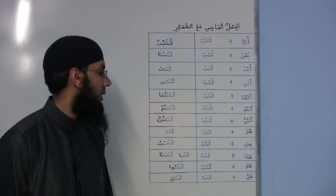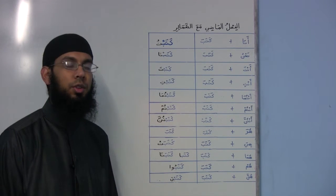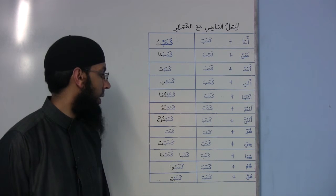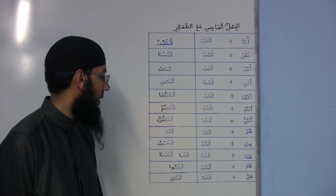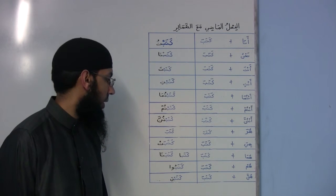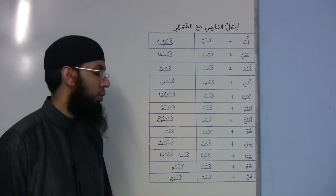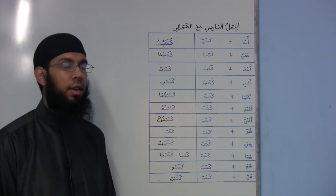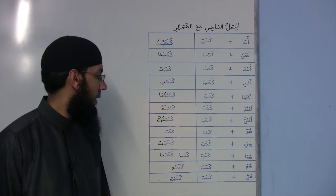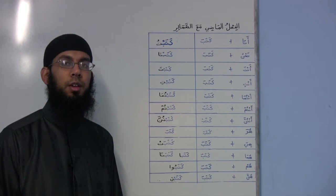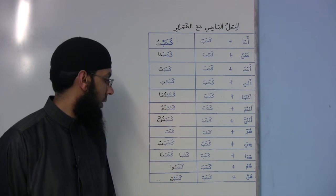Hua: kataba — 'he wrote.' Hiya: katabat — 'she wrote.' Huma: kataba — 'them two wrote,' for two males or one male and one female. Katabata — 'them two wrote,' for two females. Hum: katabu — 'they wrote,' for a group of males. Hunna: katabna — 'they wrote,' for a group of females.